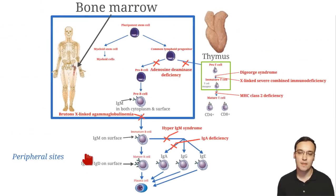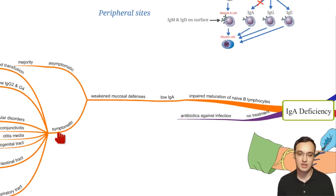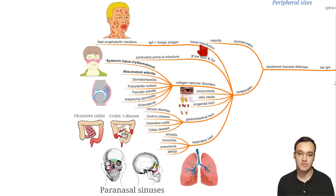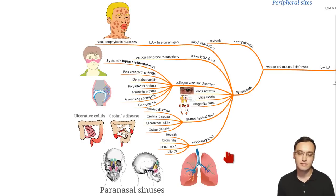In summary, the main message for IgA deficiency is that we have a blocked maturation of B lymphocytes — specifically between immature B cell and mature B cell — resulting in low IgA and weakened mucosal defenses. Most patients are asymptomatic, but some can have anaphylactic reactions from blood transfusion. If they also have low IgG2 or IgG4, they are particularly prone to infections of the respiratory, gastrointestinal, and urogenital tracts, as well as otitis media, conjunctivitis, and autoimmune diseases like systemic lupus erythematosus and rheumatoid arthritis.